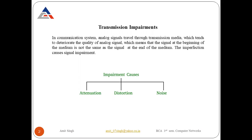In simple terms, transmission impairment means whenever I am a sender and you are the receiver, whenever I send some data towards you, the form of the data at the sender side is not the same when you receive it. Some type of loss of data is there — some loss of data is always there. This loss of data is called transmission impairments.